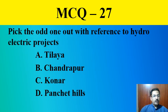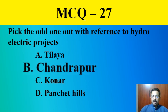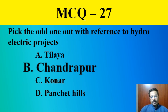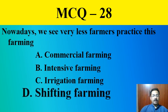MCQ question twenty-seven: Pick the odd one out with reference to hydroelectric projects — Tilaya, Chandrapur, Konar, Panchat Hills. The correct answer is Chandrapur, because Tilaya, Konar, and Panchat Hills are three hydroelectric dams constructed across the River Damodar, whereas Chandrapur is not a dam but a thermal electricity producing area. MCQ question twenty-eight: The correct answer is shifting farming. Nowadays we see very few farmers practicing shifting cultivation.